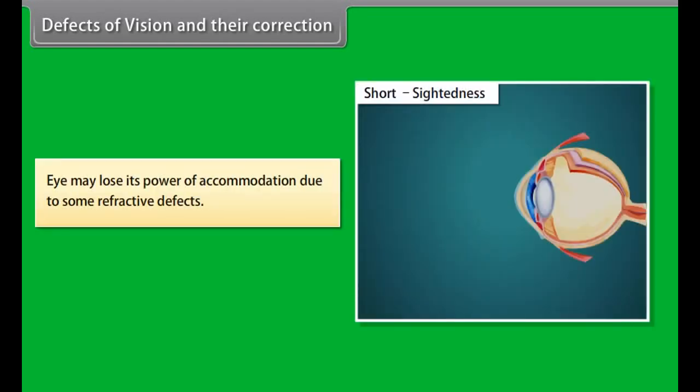Eye may lose its power of accommodation due to some refractive defects. There are three such defects.